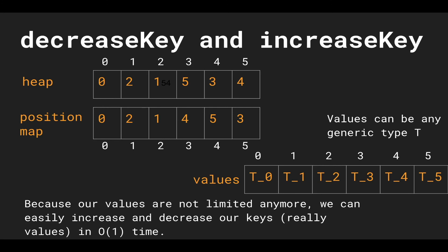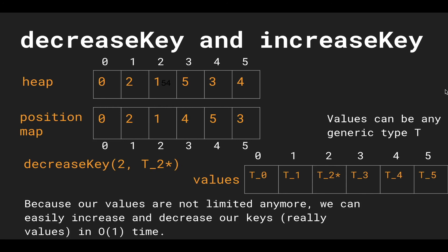Now, because our values are not limited anymore, we can easily increase and decrease our keys — meaning increase and decrease the values associated with the keys. This takes constant time. Let's say I wanted to decrease the value of key 2 to a new value T2*. The existing value of key 2 is T2. Before, increase and decrease key was linear because we had to search the entire heap for the specific value. But now we have a constant time lookup — we just use the key to index into our value array and update it directly.